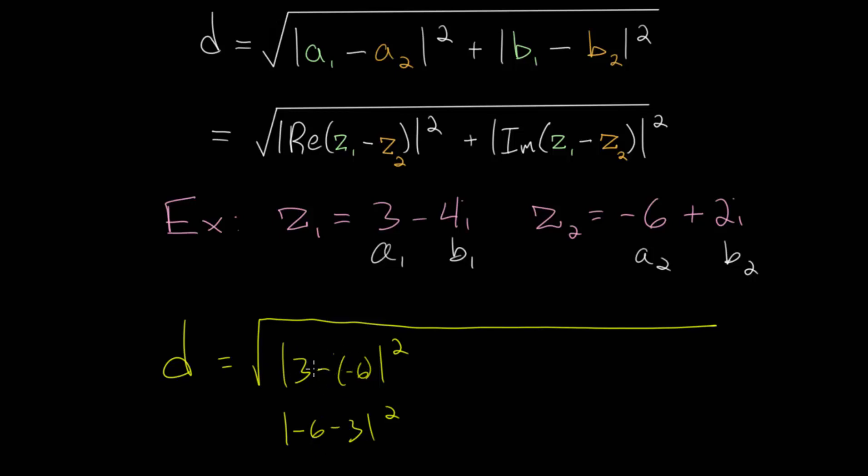Since 3 plus 6 is 9, and minus 6 minus 3, that's negative 9, but the absolute value bars will make it positive 9.